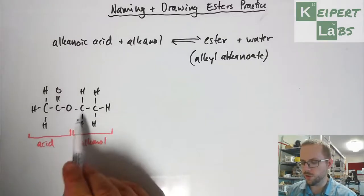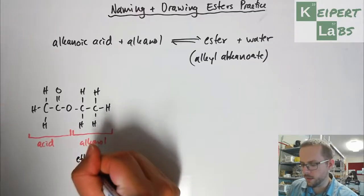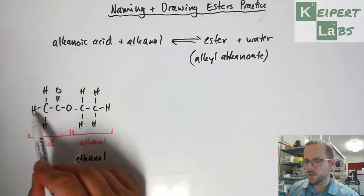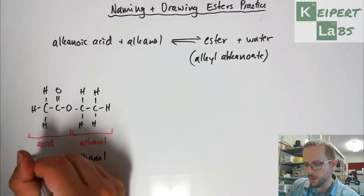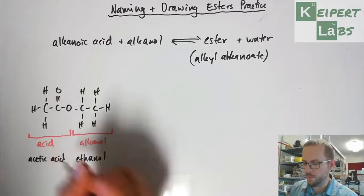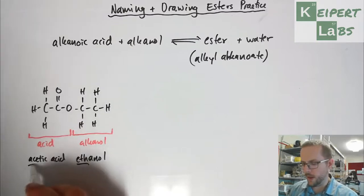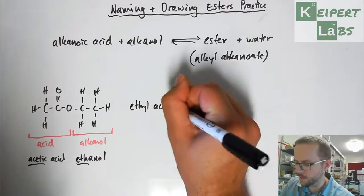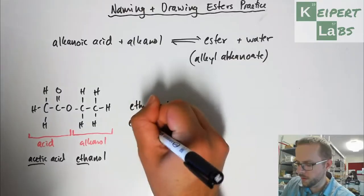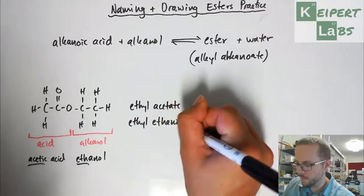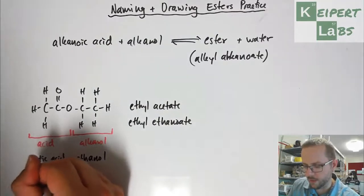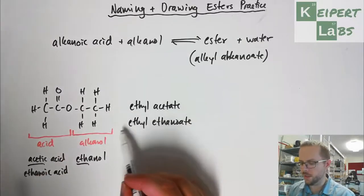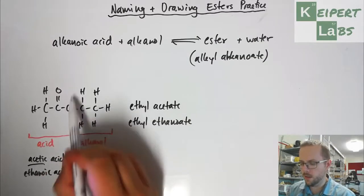So the alkanol — it's got two carbons, so two is 'eth', so it's ethanol. This bit also has two carbons, so this is acetic acid. That means we've got 'eth', and then from that it becomes ethyl acetate, or ethyl ethanolate — given that this can also be known as ethanoic acid. So that's ethyl ethanolate.